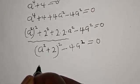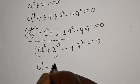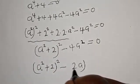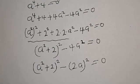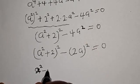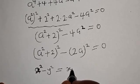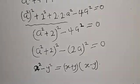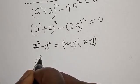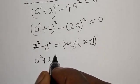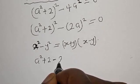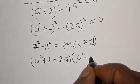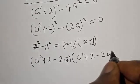So that we have a squared plus 2a squared. This is a difference of two squares. We have a squared minus 4a squared equal to 0, so that we have a squared plus 4a squared equal to 0.